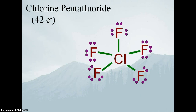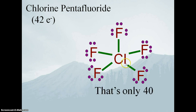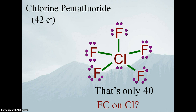One more example: chlorine pentafluoride. Chlorine pentafluoride has a total of 42 valence electrons. After step three — placing the remaining electrons around the outer atoms — we only have 40 electrons shown. We still have two more. Following our rules, step four says to place any remaining electrons around the central atom, so we drop them on our chlorine as a lone pair. What's the formal charge on the chlorine? Well, chlorine has seven valence electrons. Subtract off the lone pair and one from each of the five bonds — that's one, two, three, four, five, six, seven. So the formal charge on the chlorine is zero. All the fluorines are zero. This is the most stable Lewis structure — in fact the only resonance structure — because everybody has a formal charge of zero. Happy, happy, joy, joy.